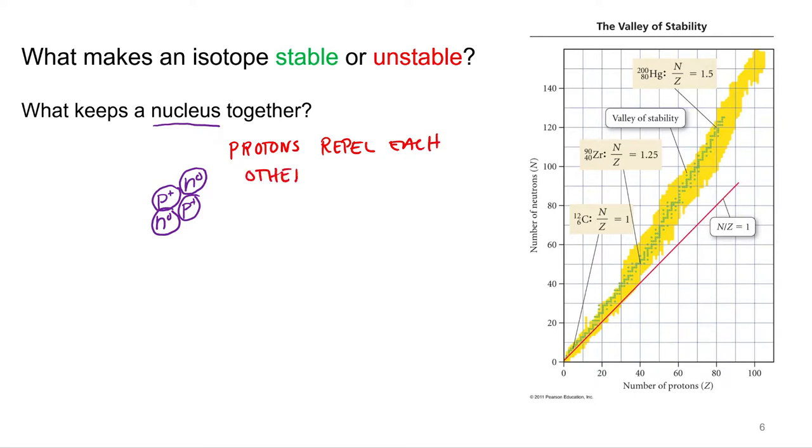So protons repel each other through charge. And that is a force, right? A charge attraction or repulsion is a force. And of course, that comes from a force of nature. Charge attraction or repulsion is from the electromagnetic force.